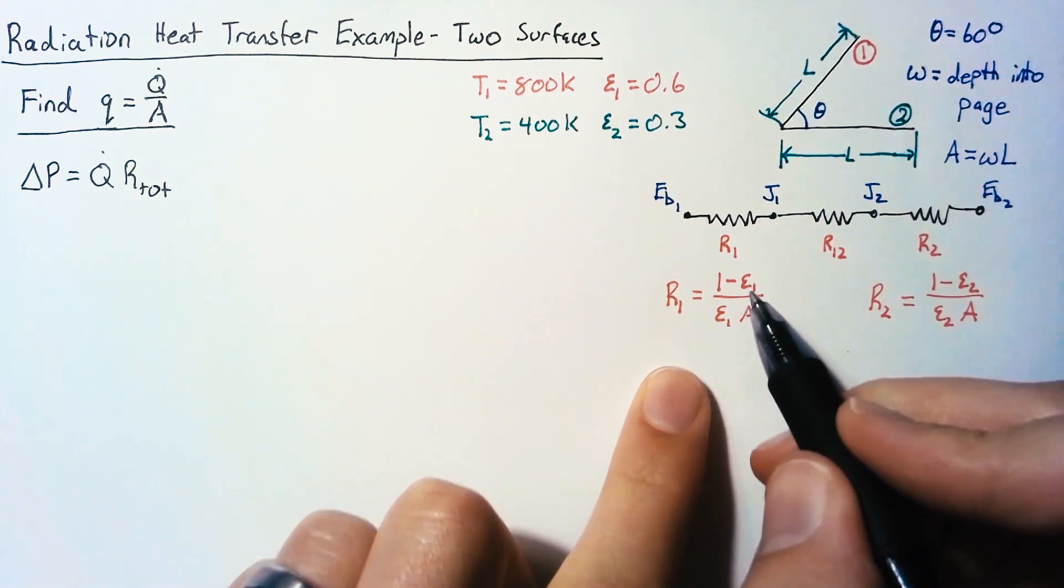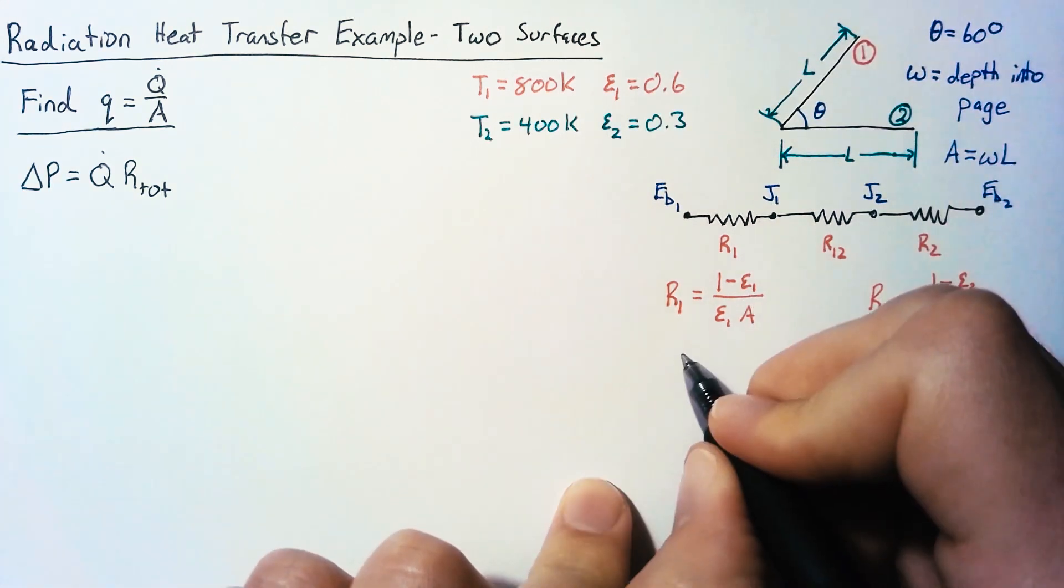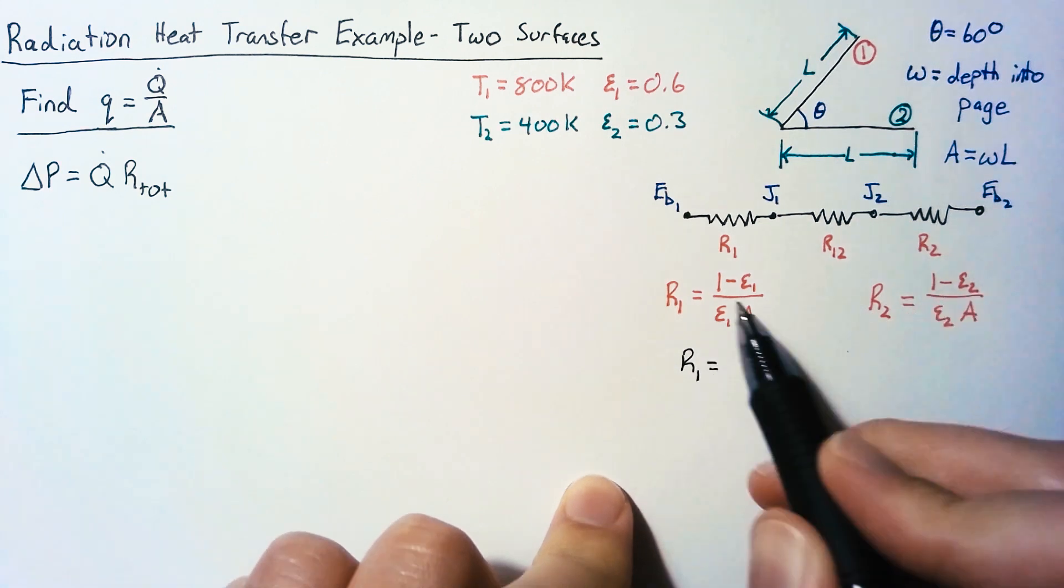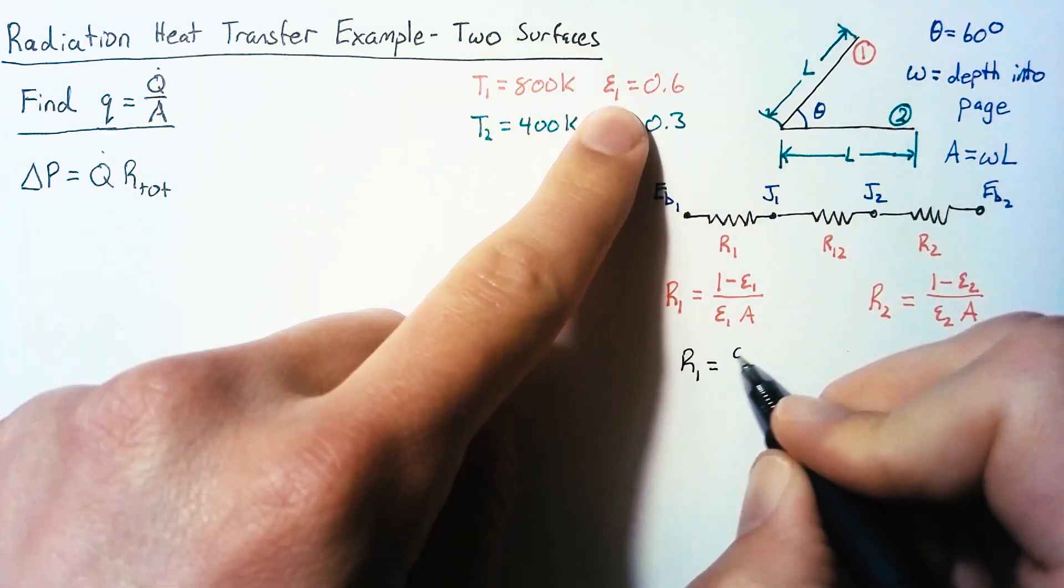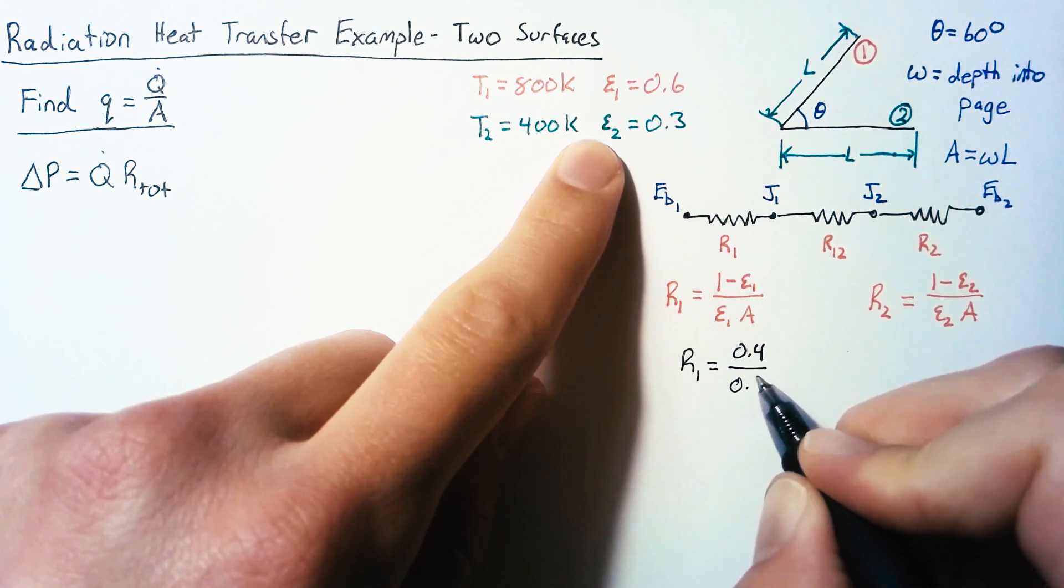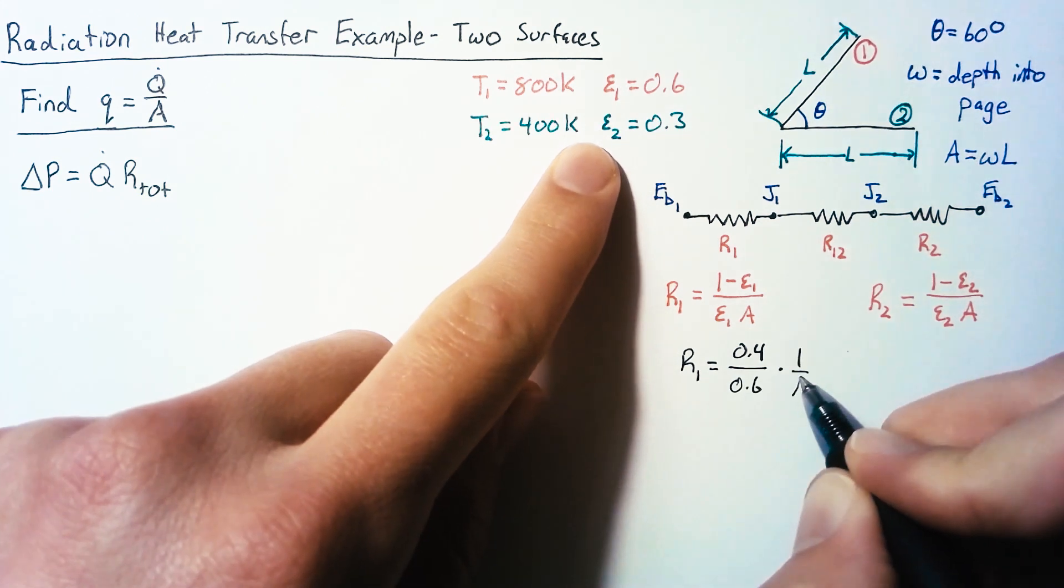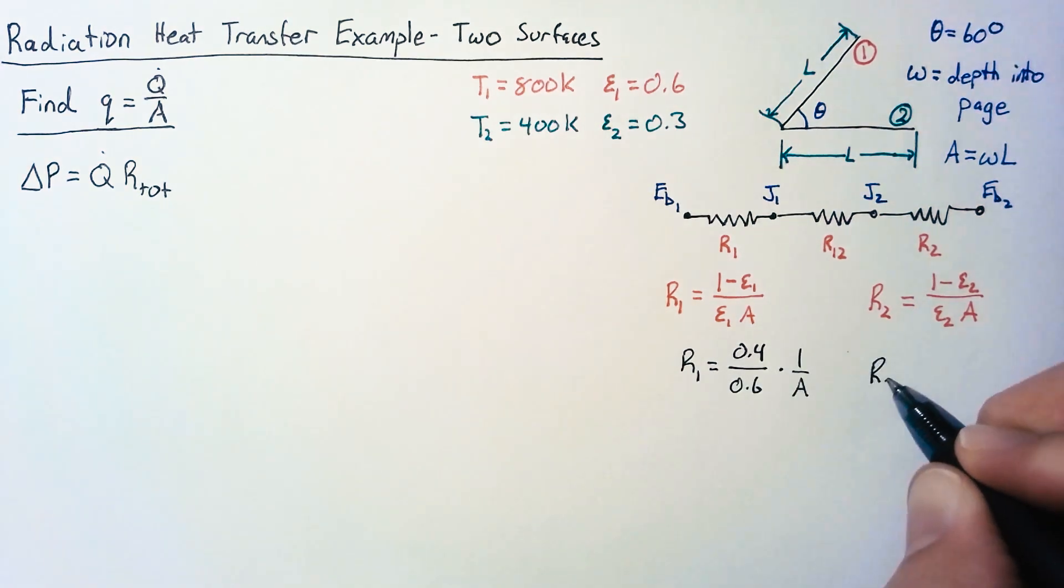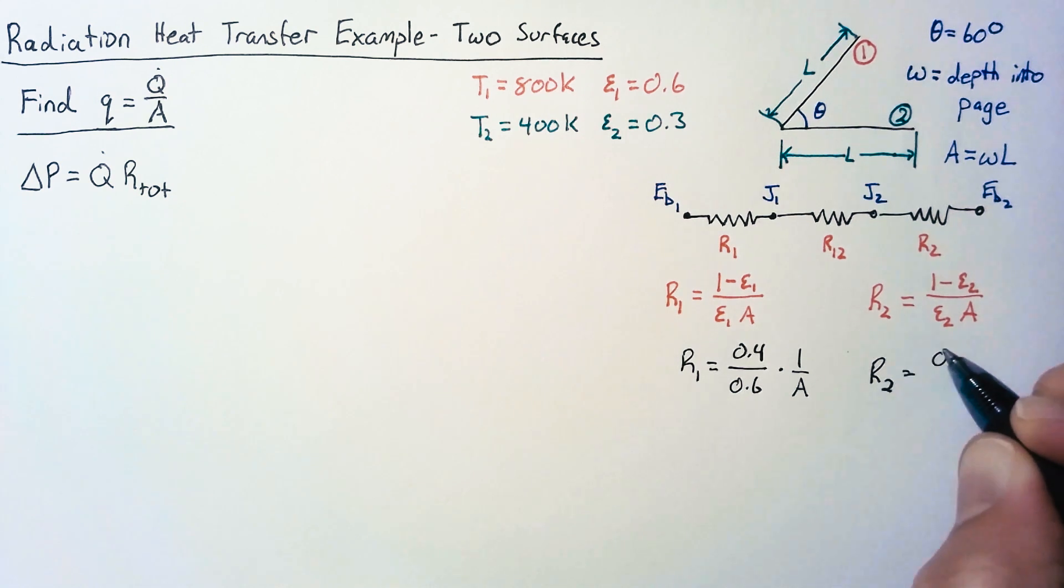Now we can go and plug in values for epsilon 1 here. We can say that R1 is going to be 1 minus 0.6, or 0.4, divided by 0.6 multiplied by 1 over A. Doing the same thing for R2 gets us 0.7 divided by 0.3 multiplied by 1 over A.